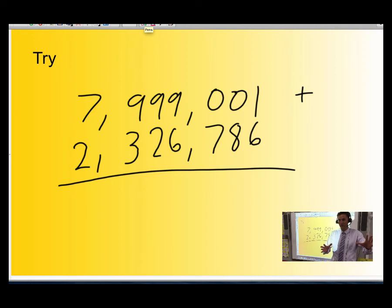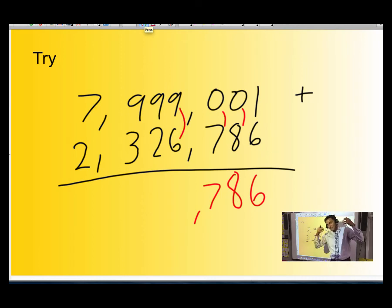I hope you paused me because I'm going to do it. Let's see how you went. I'm going to go pretty quickly. 1 and 6 is 6. 0 and 8 is 8. 0 and 7 is 7. Should have put the comma down. 6 and 9 is 15. Put down the 5, carry the 1. 1 plus 9 is 10, plus 2 is 12. Put down the 2, carry the 1.